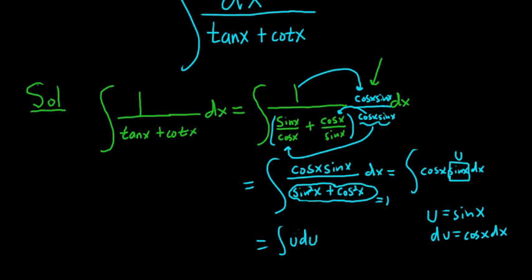And now it's easy, right? We just use the power rule. There's a 1 there. So it's u squared over 2 plus our constant integration c. And so that's equal to sine squared of x, right? Because u is sine over 2 plus our constant c.